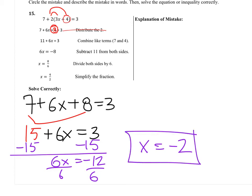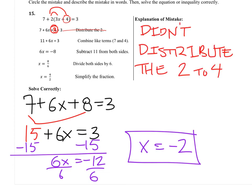Alright, so there were two parts. Notice we had to circle the mistake. Describe it in words. On the test, you will have to do that. Didn't distribute the 2 to 4.